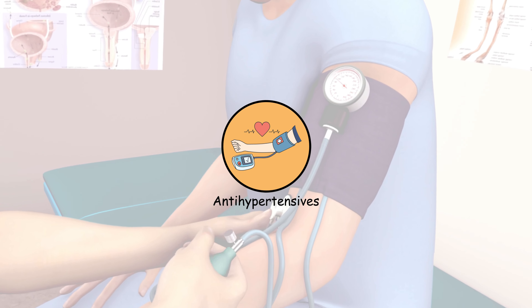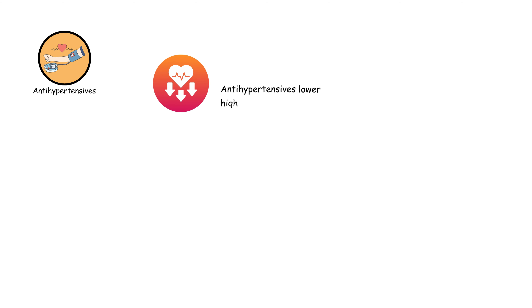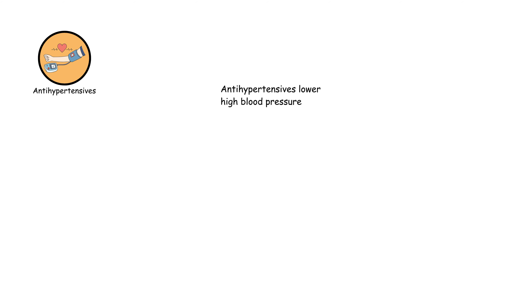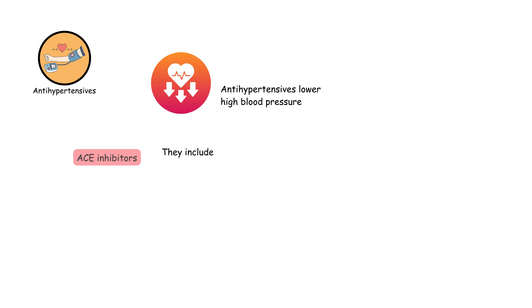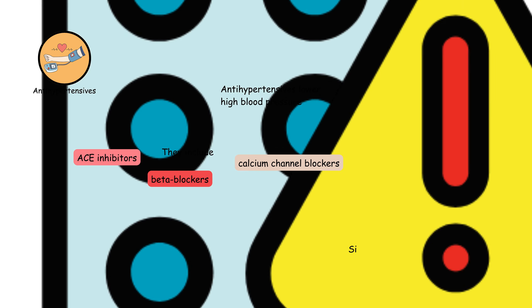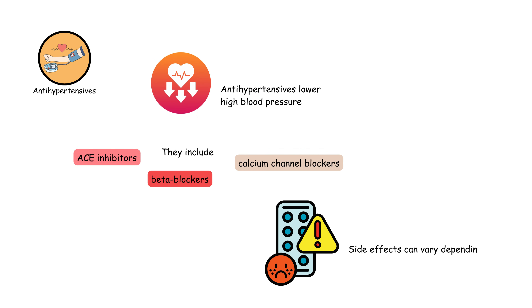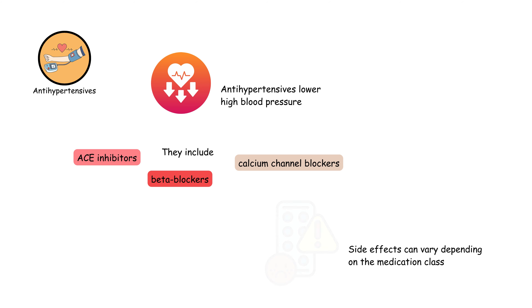Antihypertensives lower high blood pressure. They include ACE inhibitors, beta blockers, and calcium channel blockers. Side effects can vary depending on the medication class.